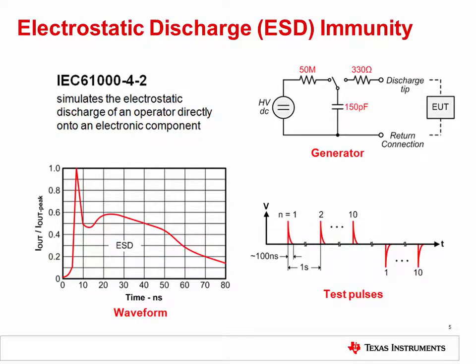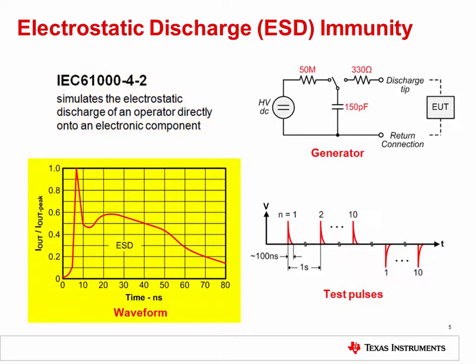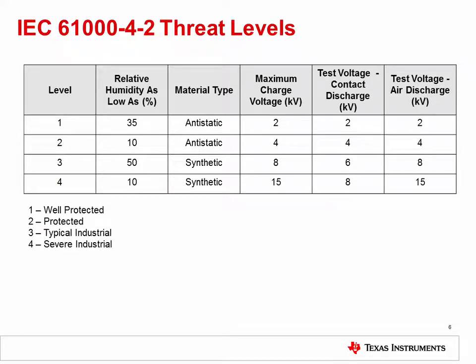Electrostatic discharge, or ESD, is one of the most common forms of transients in electronic systems. ESD results from conditions which allow the buildup of electrical charge from contact and separation of two non-conductive materials. When the charged body is brought in proximity of another object of lower potential, energy is released in the form of ESD. ESD is standardized in IEC 61000-4-2. This standard gives the parameters of the current waveform associated with the ESD event, as well as the time between ESD events or test pulses. The standard also provides the maximum charge voltage given in kilovolts. Four different threat levels are defined, which depend on ambient humidity, material type, and expected amount of handling. Level one is the least severe, while level four is the most severe.